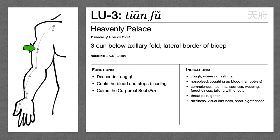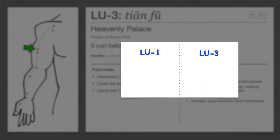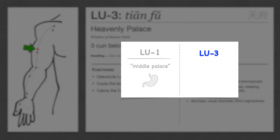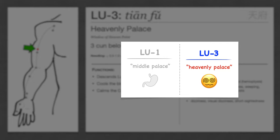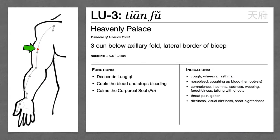As for the name, Tian Fu means heavenly palace — a common trend that most window of heaven points have the word heaven in the name. As an alternative interpretation, Maciocha compares the name to Lung 1. Just as Lung 1 is called middle palace because it affects the middle jiao, Lung 3 is named heavenly palace because it has an effect on the head — the heaven part of the body — treating things like insomnia, forgetfulness, dizziness, and vision problems. For Lung 3, mainly remember that it's a window of heaven point and it calms the corporeal soul, treating things like sadness and grief.